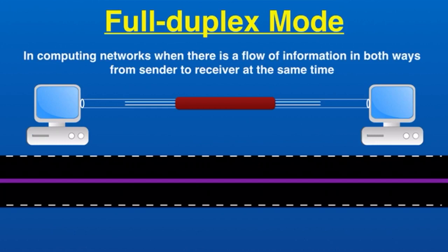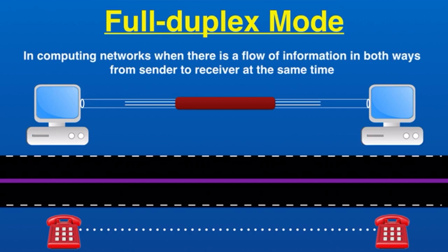Full duplex is considered the fastest mode of communication between devices. The most common example is a telephone network — when two people communicate by telephone, both can talk and listen at the same time. That brings us to the end of this video; thanks for watching, please subscribe.